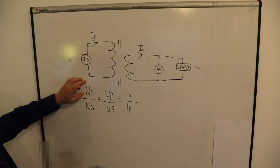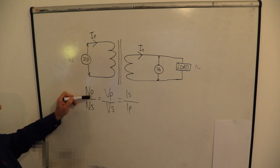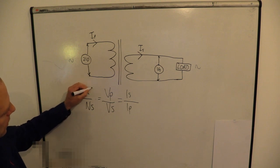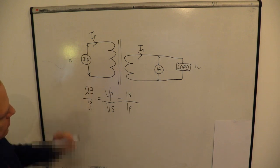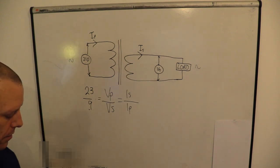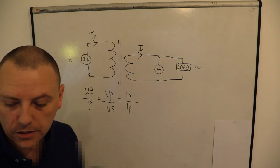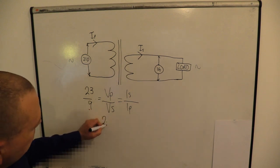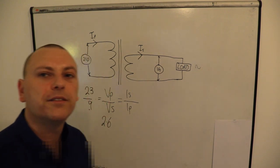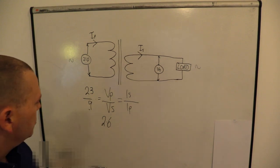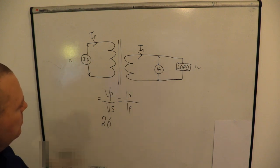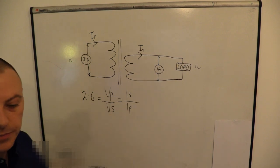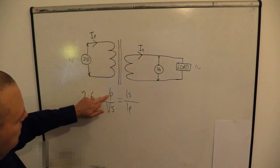Let's put some numbers in and work out the ratio, because we can get one number and then use it to find the other values. We have 23 on the primary and 9 on the secondary. 23 divided by 9 gives us 2.6. So we can put 2.6 into the equation. We know the primary voltage was 210, so let's put that in place.